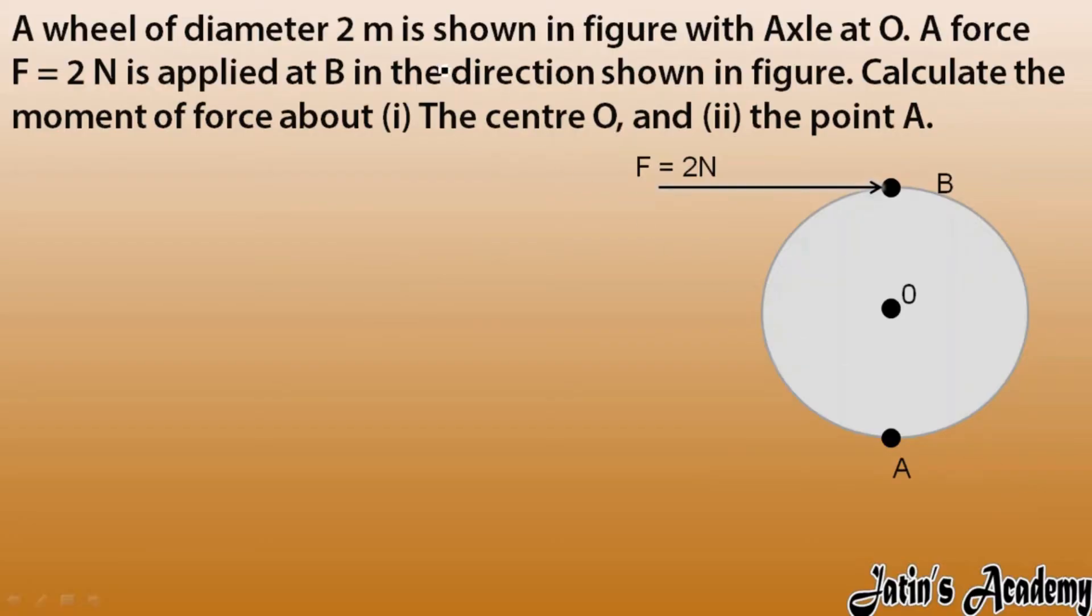A wheel of diameter 2 meters is shown in the figure with axle at O. A force of 2 Newtons is acting, applied at B in the direction shown. We have to calculate the moment of force about the center O and the point A.